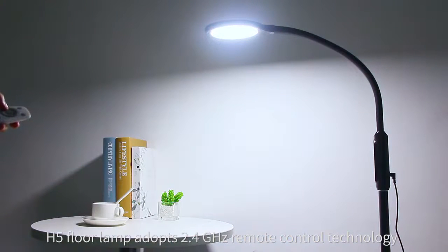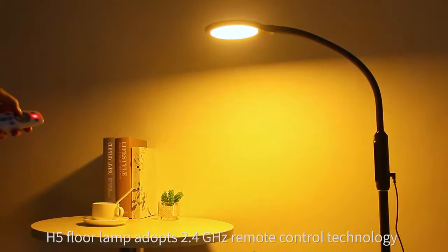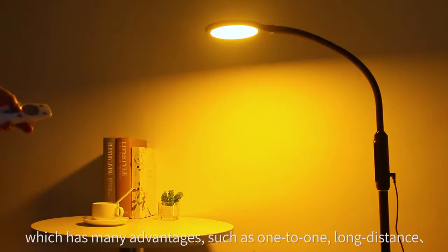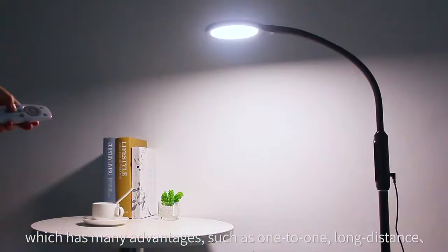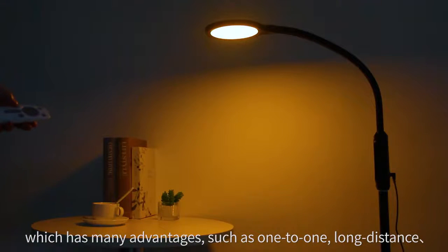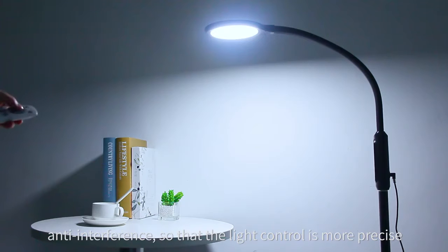The H5 floor lamp adopts 2.4 GHz remote control technology, which has many advantages such as 1-to-1 pairing, long distance, and anti-interference, so that the lamp control is more precise.